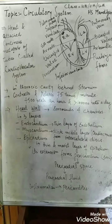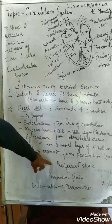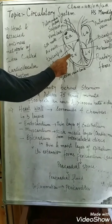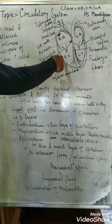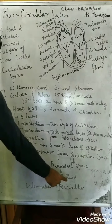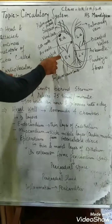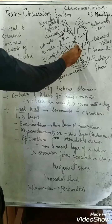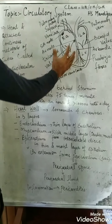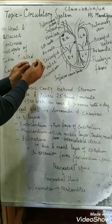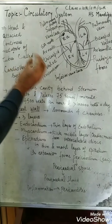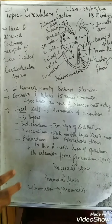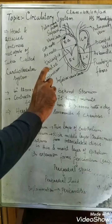Between the pericardium and the epicardium there is a space called the pericardial space. This pericardial space is filled with a fluid called the pericardial fluid. That fluid acts as a lubricant — since the heart continuously contracts and relaxes, the pericardial fluid reduces friction and prevents the heart from being damaged or collapsing.